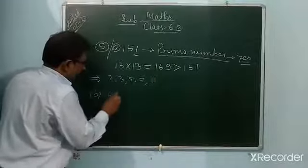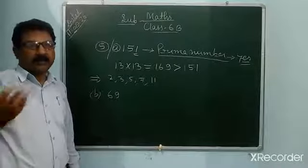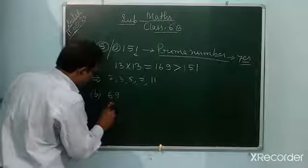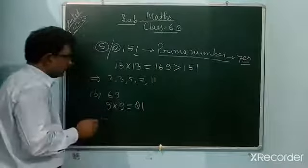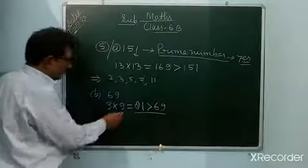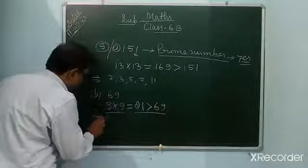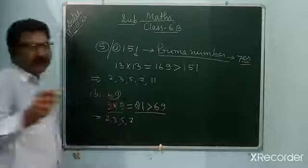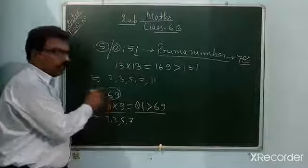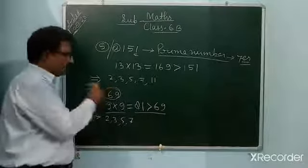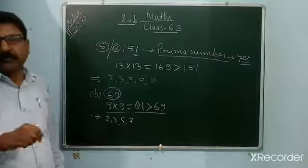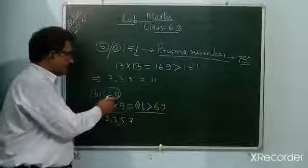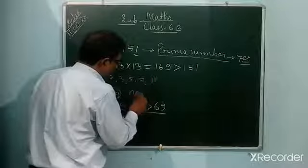Question 5(B): 59 — this is a prime number. Question 5(C): 69. Check: 9×9=81, which is more than 69, so take prime numbers less than 9: 2, 3, 5, and 7. By 2 — not divisible. By 3 — 6+9=15, divisible by 3. So 69 is composite — not a prime number.